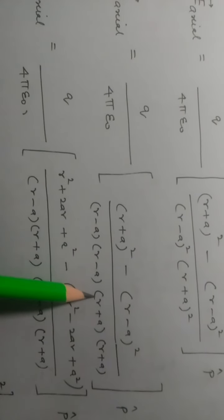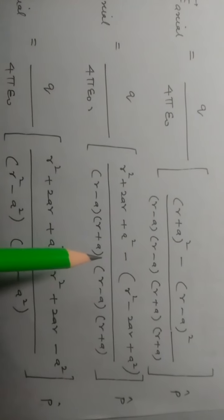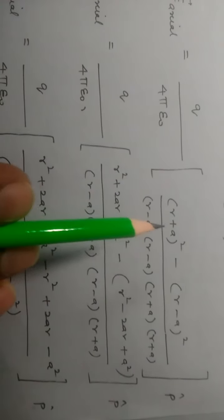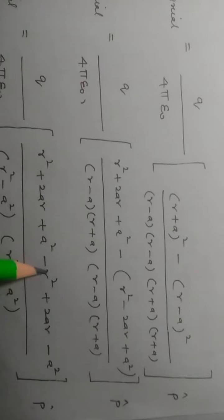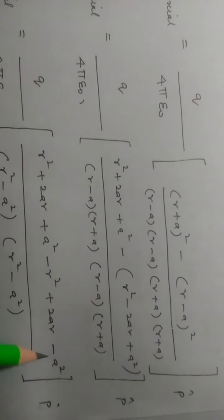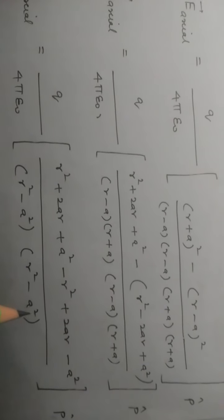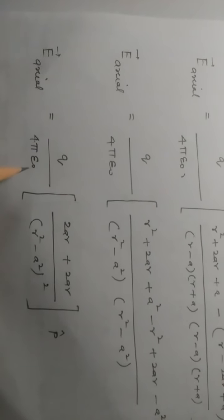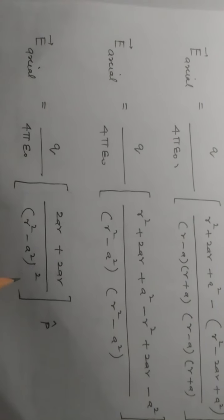Combining terms, we get two factors of (r squared minus a squared) in the denominator. Opening the numerator bracket using the (a plus b) and (a minus b) whole square identities: r squared cancels with r squared, and a squared cancels with a squared. So remaining in the numerator is 2ar, giving 2ar upon (r squared minus a squared) squared. Therefore E_xl equals q upon 4π epsilon times 2ar upon (r squared minus a squared) squared times p-hat.